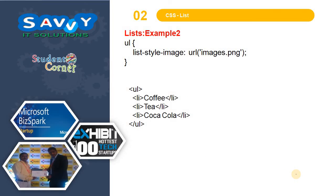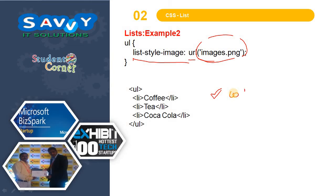The next and last thing is how to import an image as a list marker using list-style-image. We specify the URL with the image name, and automatically that image will be displayed as the bullet. For example, if it is a question mark image, it comes out like that as the list marker.